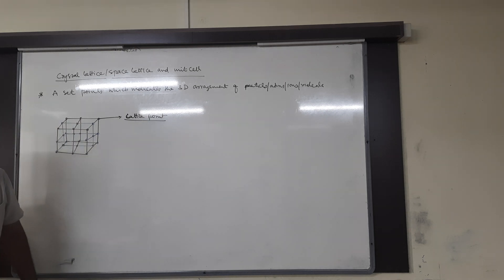Calculation of number of particles per unit cell in simple cubic crystal: n = 8 corners × (1/8) = 1. The effective number of atoms in simple cubic crystal is 1.